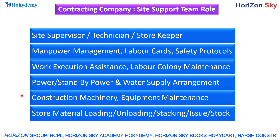Construction machinery and equipment maintenance is another support team responsibility. Machines like breakers, vibrating and compacting machines, and JCBs are used heavily and need constant maintenance. While major breakdowns require external repair, the support team handles minor faults and arranges skilled laborers for repairs, ensuring all machines are working properly at all times.